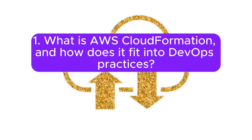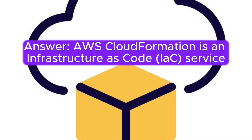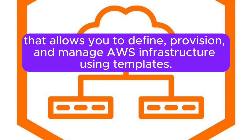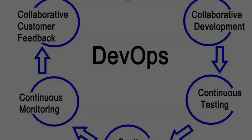Question 1: What is AWS CloudFormation and how does it fit into DevOps practices? Answer: AWS CloudFormation is an infrastructure-as-code (IaC) service that allows you to define, provision, and manage AWS infrastructure using templates. In DevOps, it's essential for automating infrastructure provisioning and maintaining consistency.